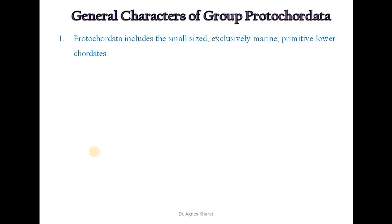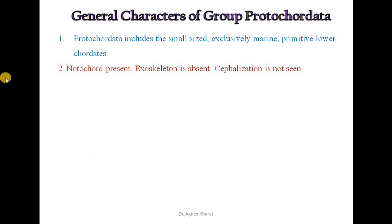Proto-Chordata means primitive chordate animals. Proto-Chordata includes all the small sized, exclusively marine, primitive lower chordate animals. In these animals, notochord is present, exoskeleton is absent, and cephalization is not seen.